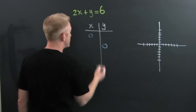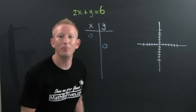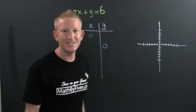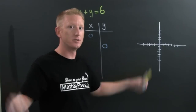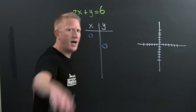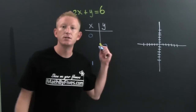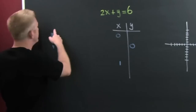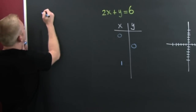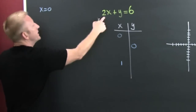We need to pick another value. Don't pick decimals — those are hard. Don't pick fractions either. We're trying to get nice numbers, and sometimes when you're picking numbers you want to pick ones that give nice results. Let's just pick X equals one. So we're completing the table of values. The first value I'm picking is X equals zero.